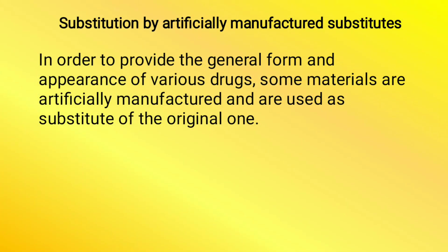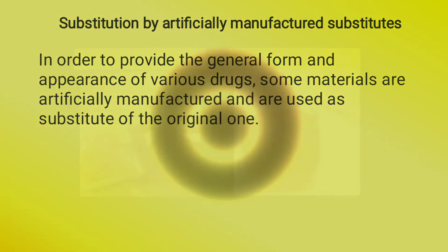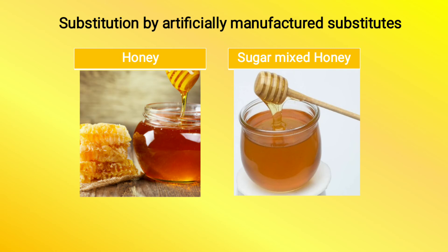The next is substitution by artificially manufactured substances. In order to provide the general form and appearance of the genuine drug, some materials are artificially manufactured and used as substitutes. Original ki tarah dikhane ke liye hum usmein aise substance mix karte hain jisse ki woh original, genuine lage. For example, here is honey and here is sugar-mixed honey. Bahut baar hume inverted sugar mixed honey milta hai. In order to get maximum profit, honey mein sugar add kar dete hain jisse ki quantity badh jaye aur zyada profit gain ho sake.